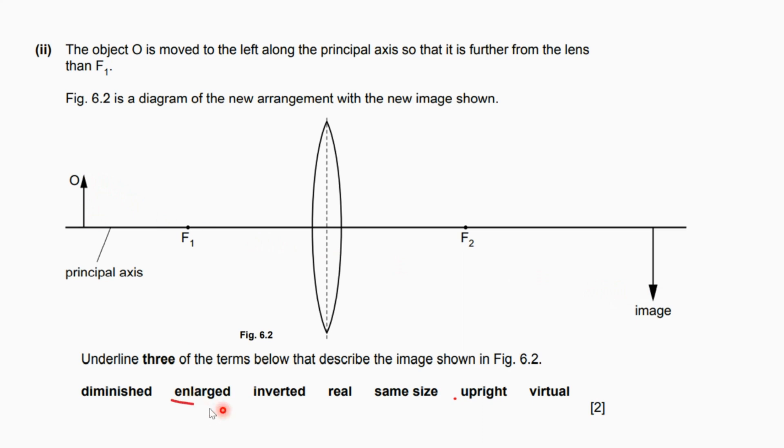Secondly, the arrow here is upright, but the image is inverted or upside down. So the second one which is inverted.